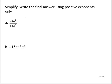Simplify. Write the final answer using positive exponents only. We have 24a to the second over 14a to the eighth. What I'm going to do here is break this up into two fractions: 24 fourteenths, and then a to the second over a to the eighth.